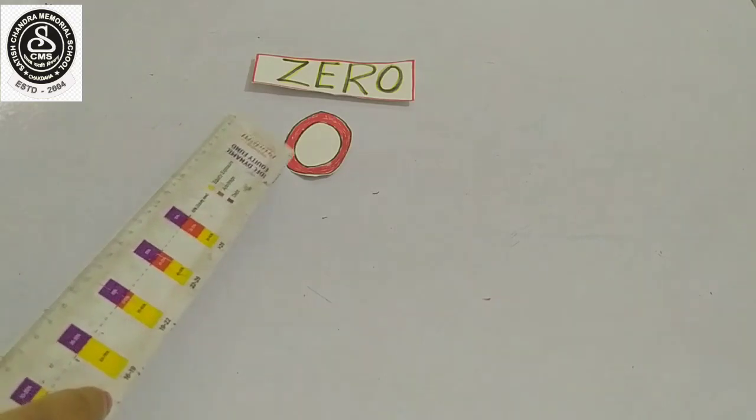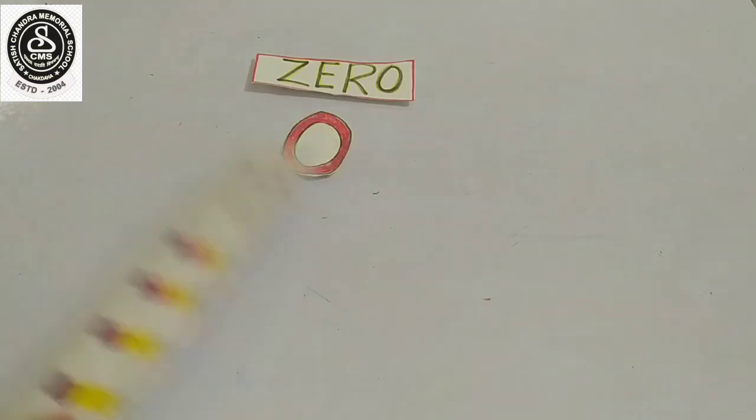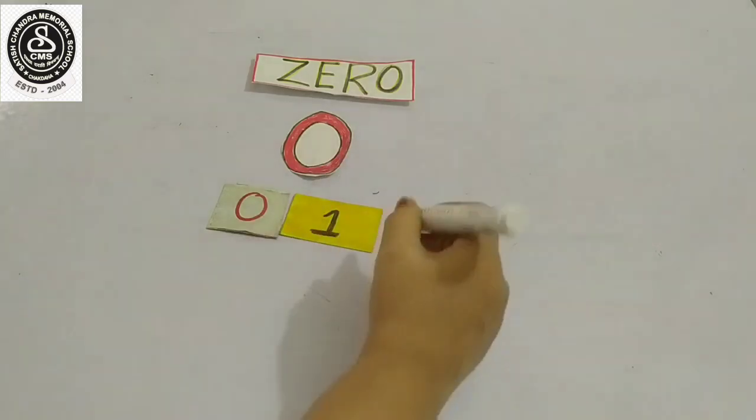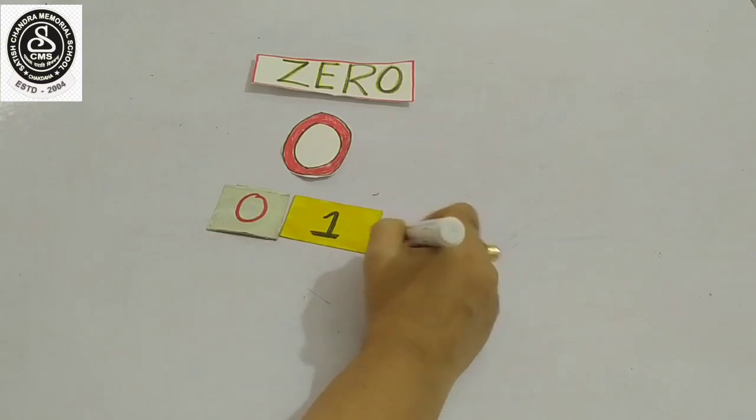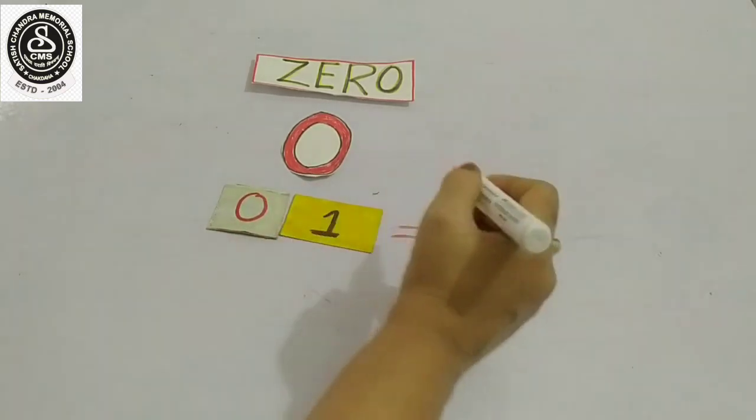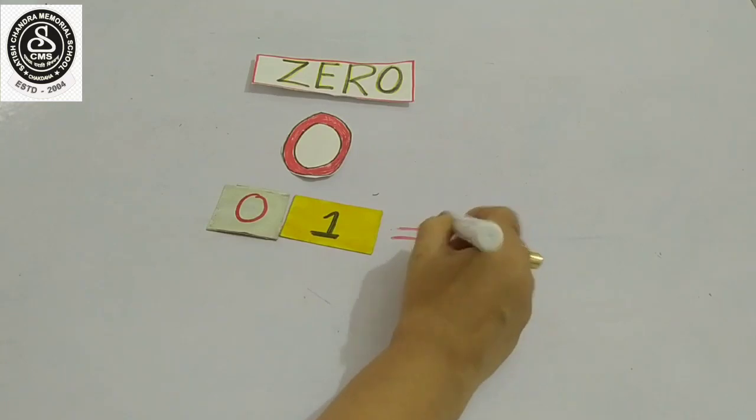So zero, here you can see zero. What does zero mean? Zero means nothing. When zero is placed before any number, it does not increase the value of that number. That means here 0, 1 is equal to only 1. Understood?